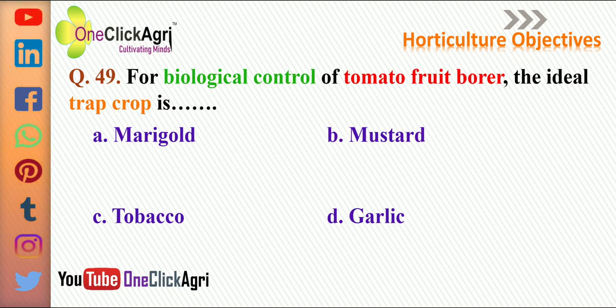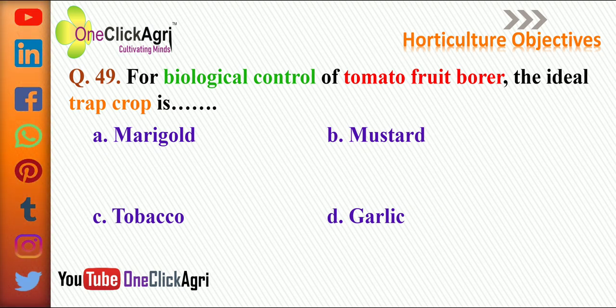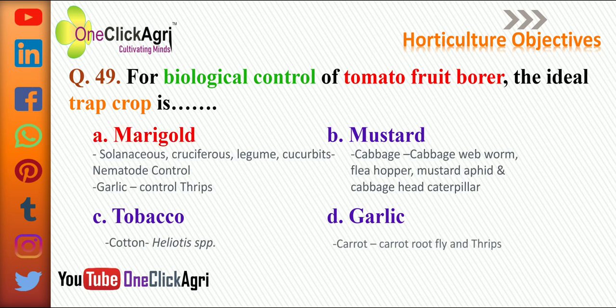For biological control of tomato fruit borer, the ideal trap crop is marigold. Marigold is used as a trap crop for solanaceous, cruciferous, legume, and cucurbit crops for nematode control. And in garlic, marigold is used as a trap crop for control of thrips.